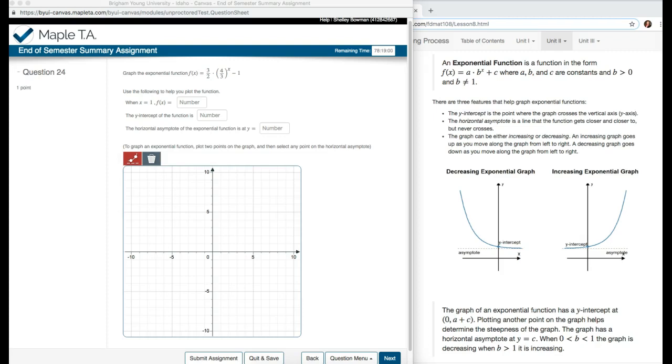Use the following to help you plot the function. When x equals 1, f of x equals. So we're going to take this right here and substitute 1 in for x, which makes it 4 thirds raised to the first power, which is just 4 thirds.